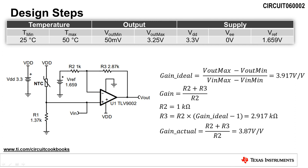The next step is to calculate the ideal non-inverting gain required to produce an output voltage from 50 millivolts to 3.25 volts, given the input voltage range calculated previously. The non-inverting gain is calculated by dividing the output voltage swing by the input voltage swing, giving a value of 3.917 volts per volt. The non-inverting gain is set by resistors R2 and R3, calculated with the equation: gain equals R2 plus R3 divided by R2. Choosing a standard resistor value of 1 kiloohm for R2, we calculate R3 to be 2.917 kiloohms. Since 2.917 kiloohms is not a standard value, we use the next closest value of 2.87 kiloohms, as shown in the schematic.